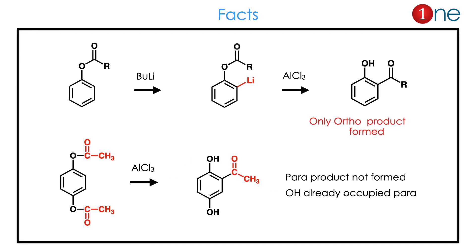Some facts on Fries rearrangement: if you use butyllithium, only the ortho product is formed. Butyllithium creates selectivity at the ortho position because the lithium coordinates with the oxygen, directing substitution to the ortho position. If the ortho positions are occupied, the remaining product will form elsewhere. Here, if para positions are occupied, only ortho product forms. So selectivity can be created by butyllithium or by substitution patterns.